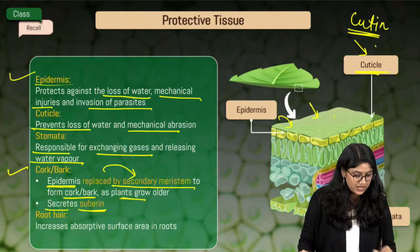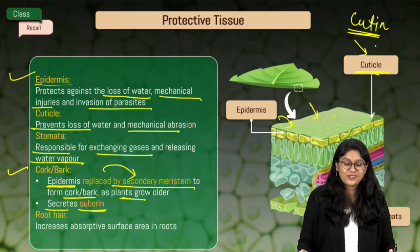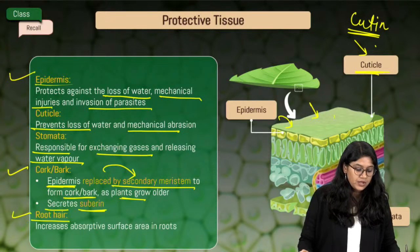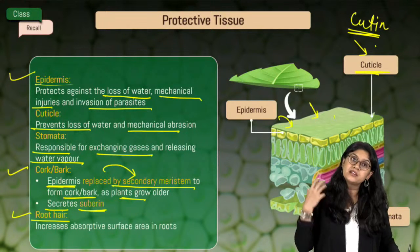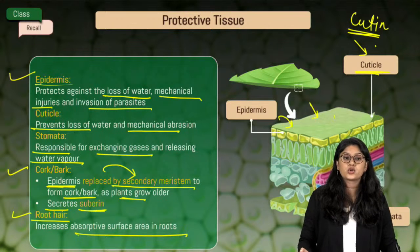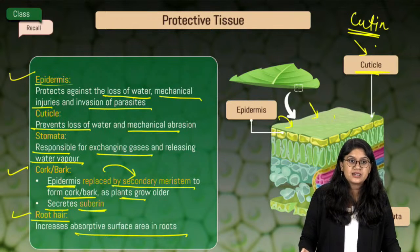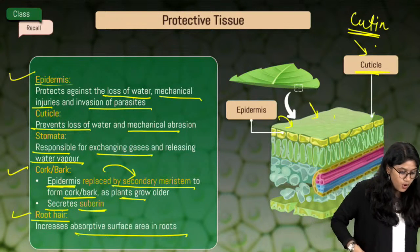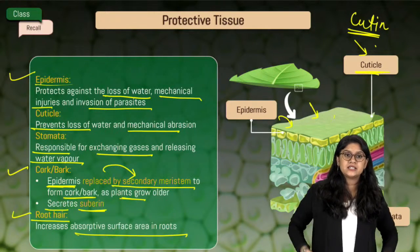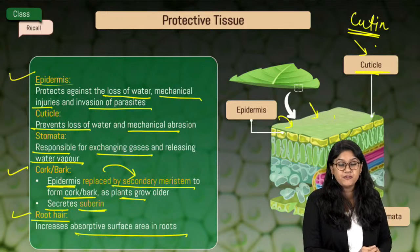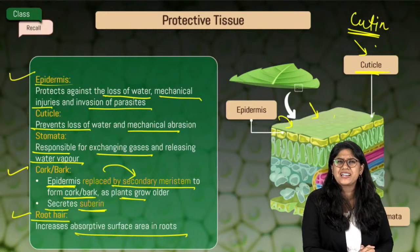This is very important. We also have root hair, which helps in increasing the absorption of water in the roots. Many of you are asking about parenchyma, chlorenchyma, and colenchyma — please wait, we will be discussing all of these in a bit.